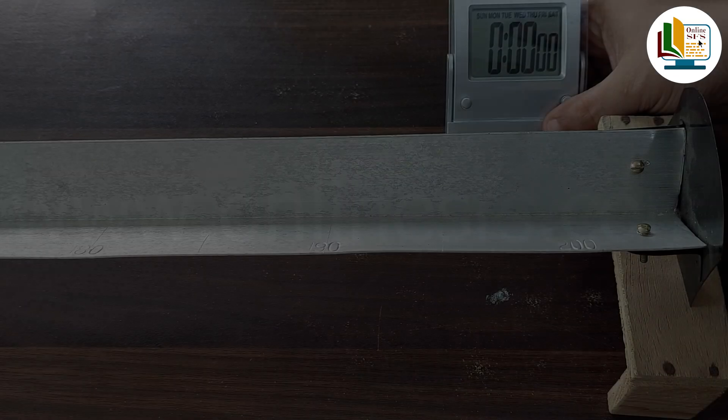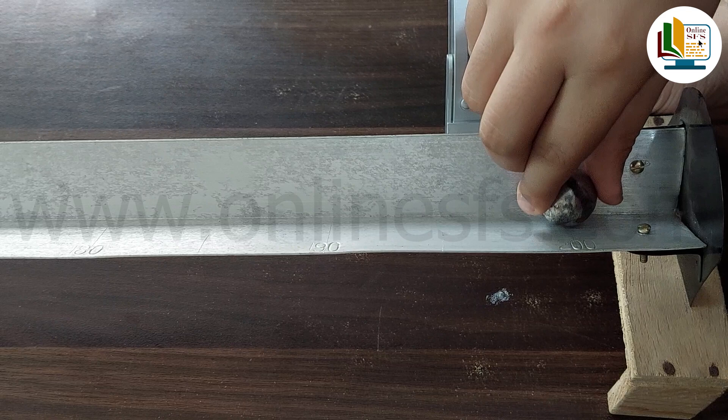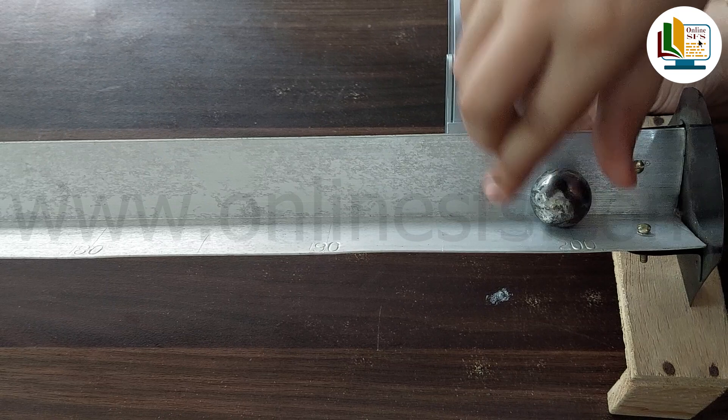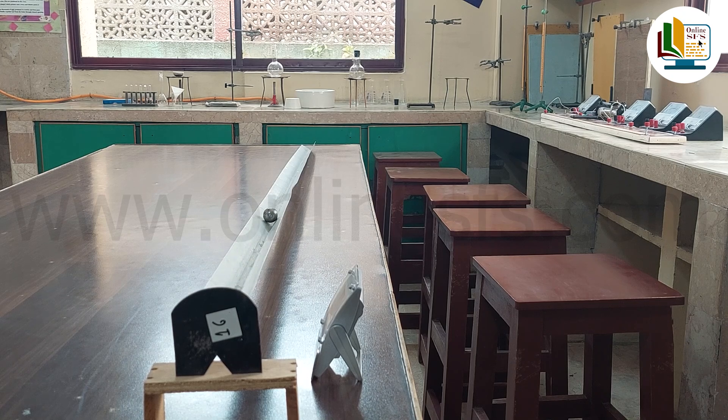Make sure angle iron's inclination is such that zero mark is at lower support and inclination should be such that the ball may roll down steadily and slowly. Now we will take our first observation by putting and holding the sphere at 200 cm mark on the inclined plane. Release the ball and at the same time start the stopwatch.